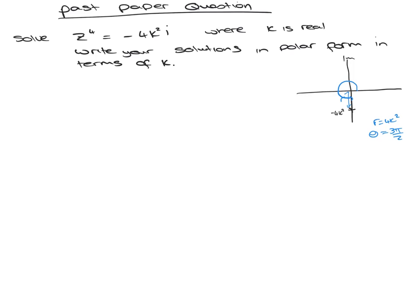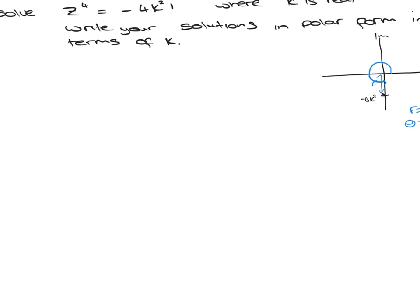So in polar form, what we're looking at is z to the 4 equals 4k squared cis 3 pi by 2.